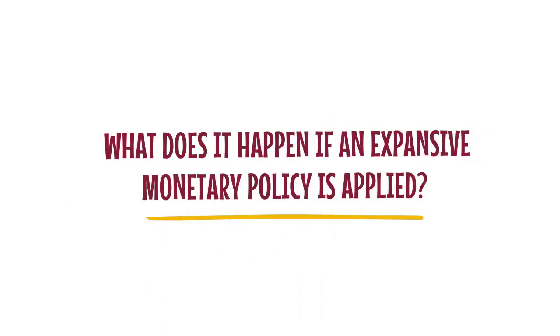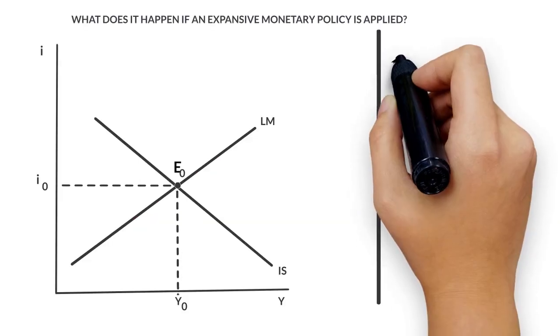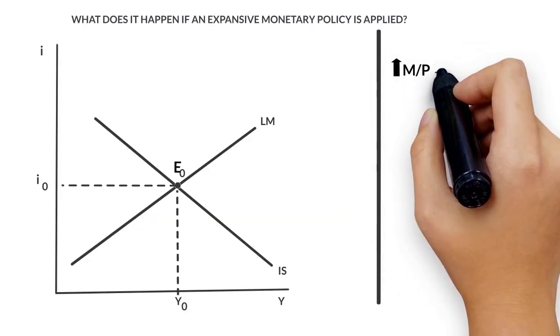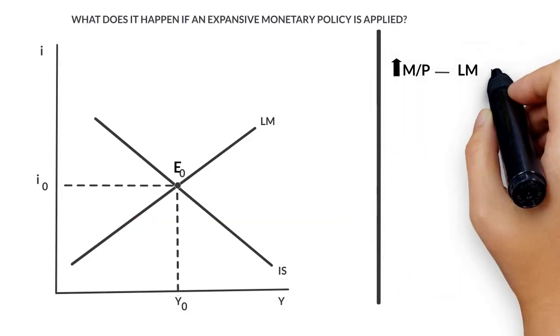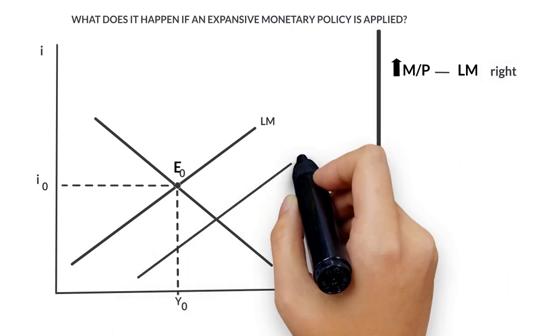What does it happen if an expansive monetary policy is applied? For example, if the money supply increases. An increase in money supply leads to a parallel shift of the LM curve to the right to LM prime.